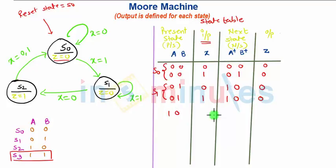For S2, 1, 0 if X is equal to 0, it will go to S0 state and output will be 1. See now for the S2 state, output is defined Z is equal to 1.